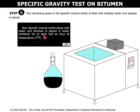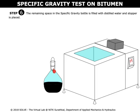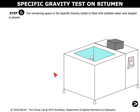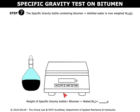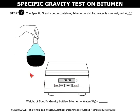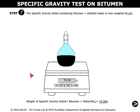Read the instructions shown here. Click on the bottle and place it in the water bath maintained at 27 degrees Celsius. Switch on the weighing machine and click on tare to clear the weight. Place this bottle in the weighing machine and note down the weight, that is W4.